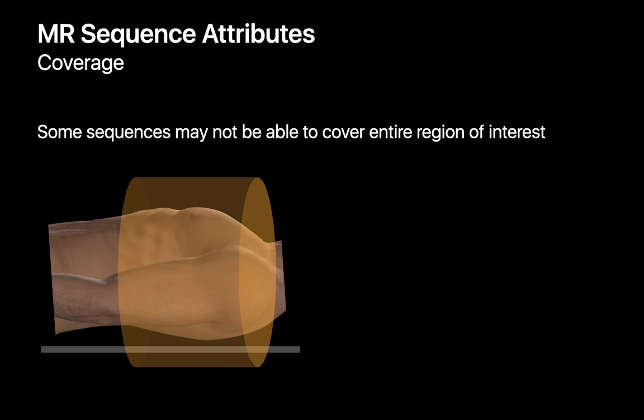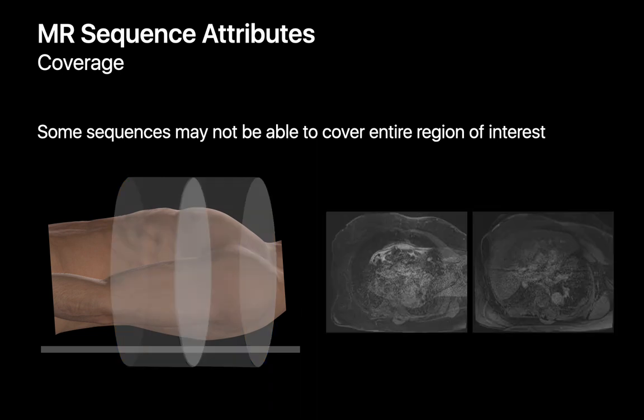We care about the coverage of an MRI sequence. If we're studying the chest and need to be sure the entire volume of interest is imaged, and a sequence isn't able to image a large enough volume, we may need to run it twice — capturing the top half of the chest first and then the bottom half on the second pass.